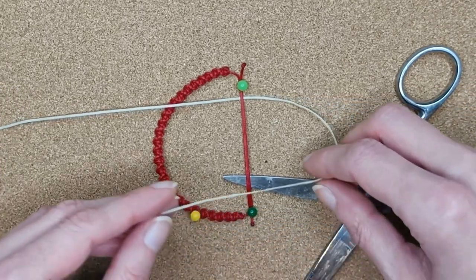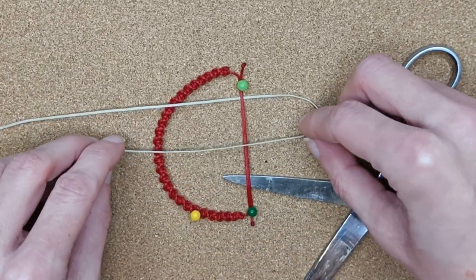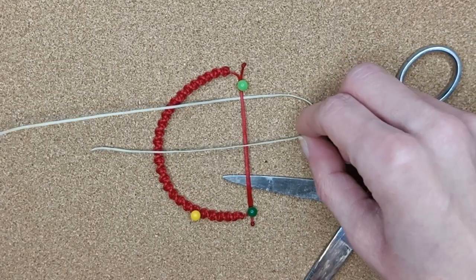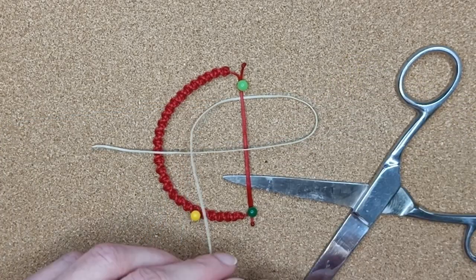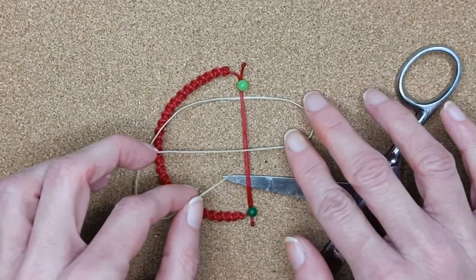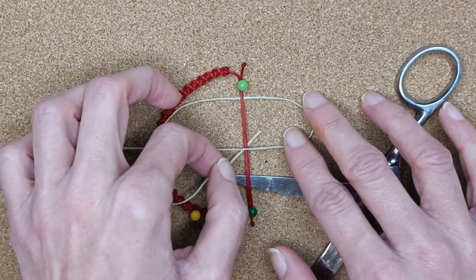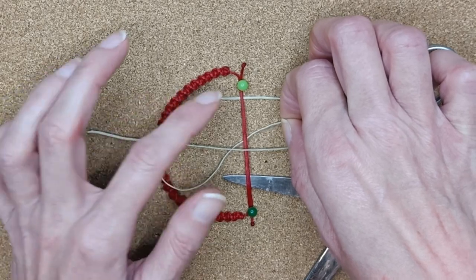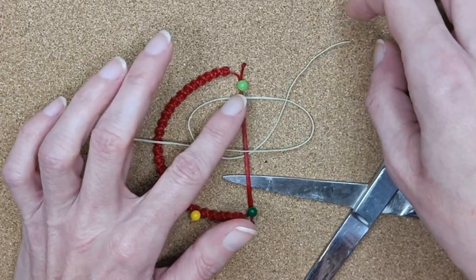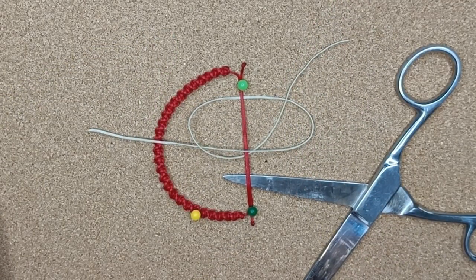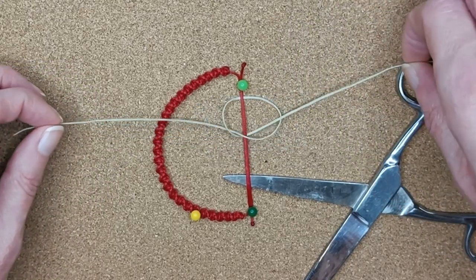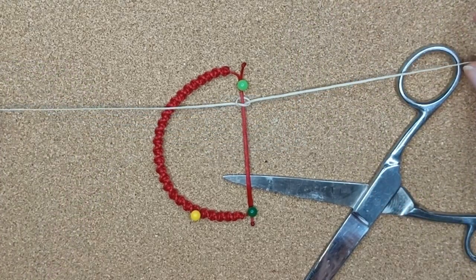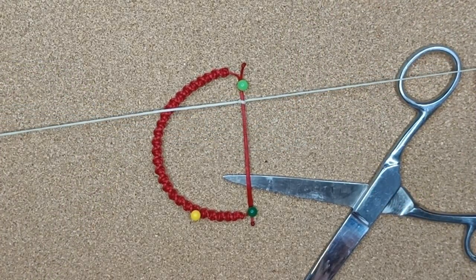First, you are going to take the right hand side cord and pass it over the middle cords. Then, you are going to take the left hand side cord, bring it over the previously right cord and pass it under it as well as under the middle cords and over the right hand side cord. Pull gently the cords until your knot is tight, but not too tight.